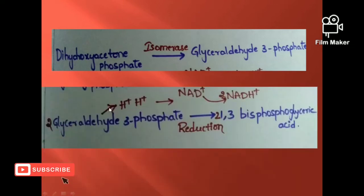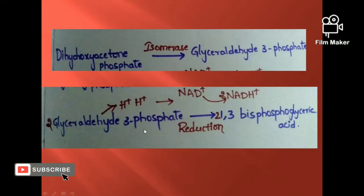In the sixth step, 2 molecules of glyceraldehyde-3-phosphate give rise to 2 molecules of 1,3-bisphosphoglyceric acid, involving the reduction of NAD+ to NADH+H+.